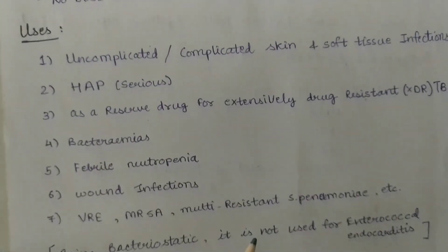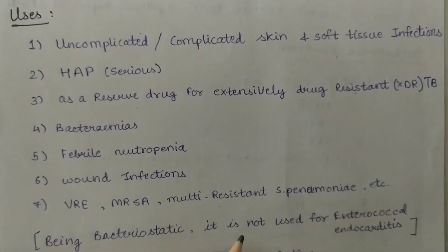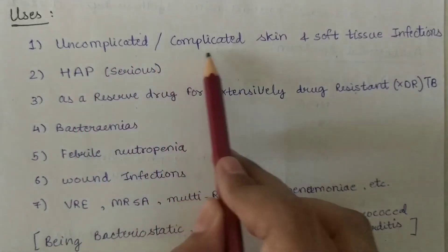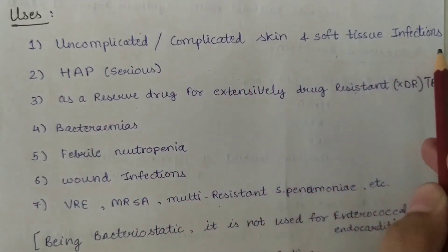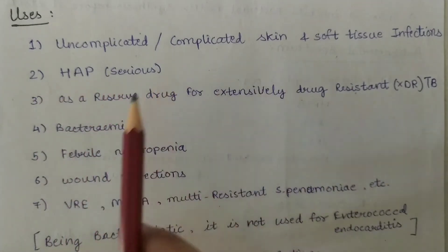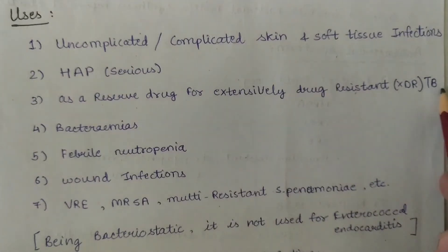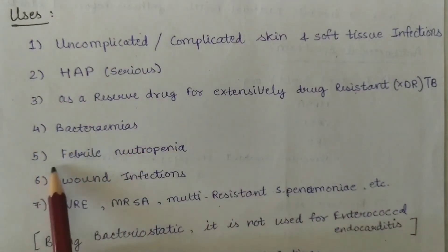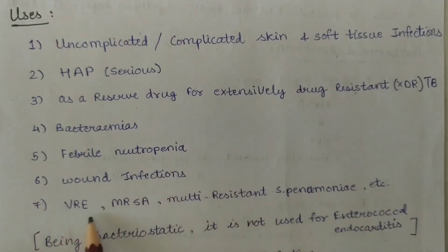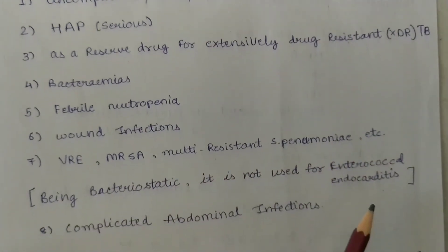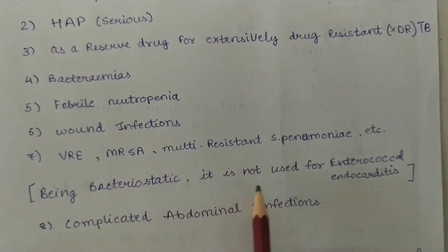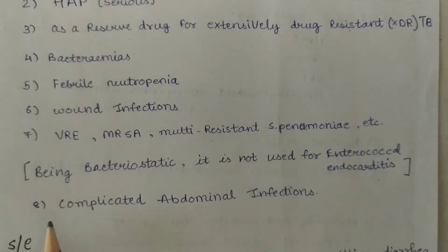The uses of linezolid: first, uncomplicated or complicated skin and soft tissue infections. Second, hospital-acquired pneumonia (HAP), the serious one. Third, as a reserved drug for extensively drug-resistant TB. Fourth, bacteremias. Fifth, febrile neutropenia. Sixth, wound infections. Seventh, VRE, MRSA, multi-resistant Strep pneumoniae, etc. Being bacteriostatic, it is not used for enterococcal endocarditis. Eighth, complicated abdominal infections.